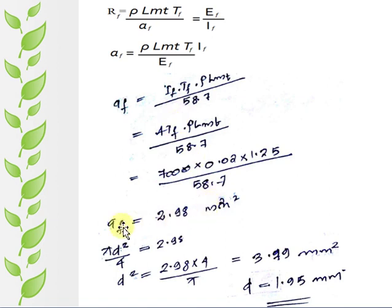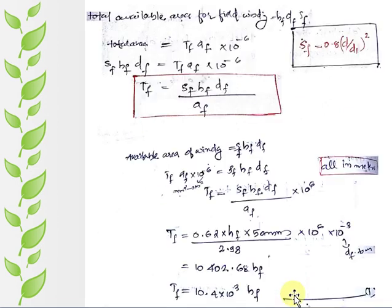After finding af as 2.98, we have another equation for af: that is pi d squared by 4. Equating this, we will get d as 1.95. D is the diameter of the winding. Define Tf using this equation.